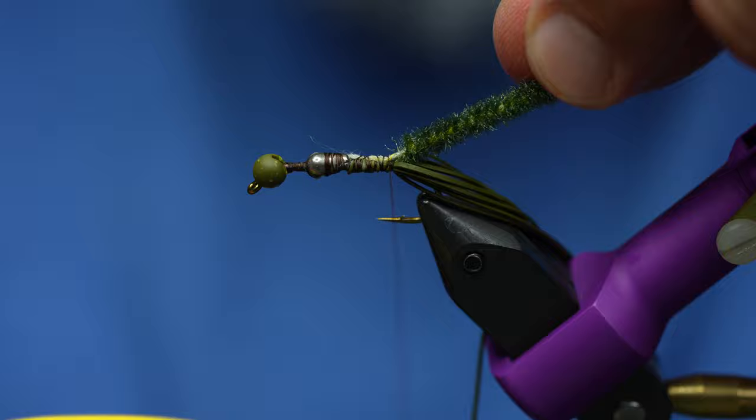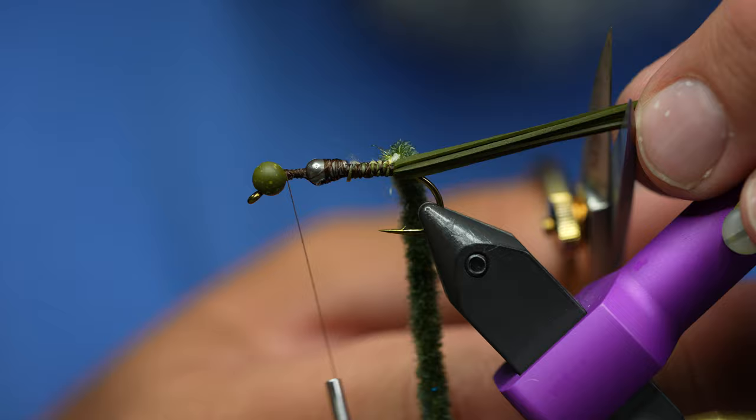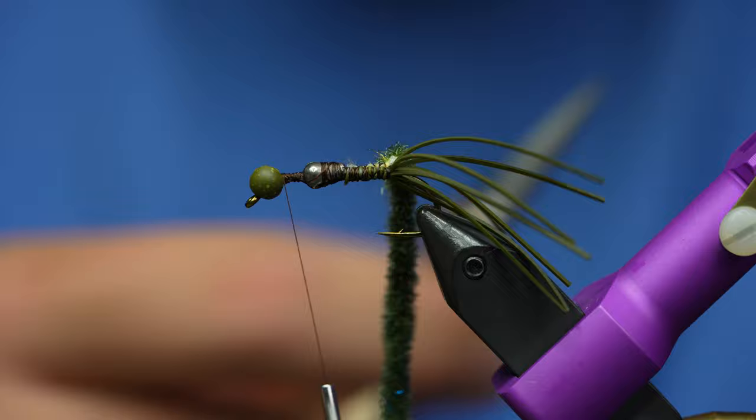I'll get it about like that. Now I'm just going to take my thread and wrap it all the way forward, and I'm going to trim these legs. You can make a little bit longer tail, but this is going to be maybe just a touch longer than the whole fly.